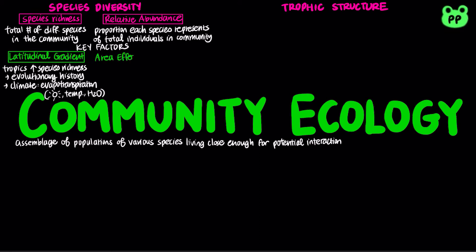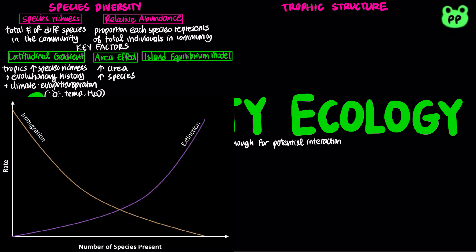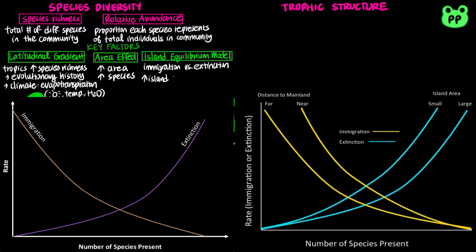Another factor that influences biodiversity is area effects. Generally, a larger geographic area has more species. Lastly, the island equilibrium model states that species richness on an island levels off at a dynamic equilibrium point, in which the rate of immigration balances the rate of extinction. Species richness also depends on island size and the distance from the mainland.